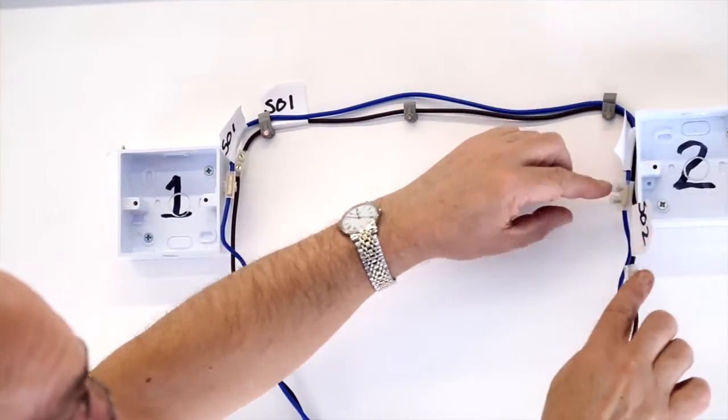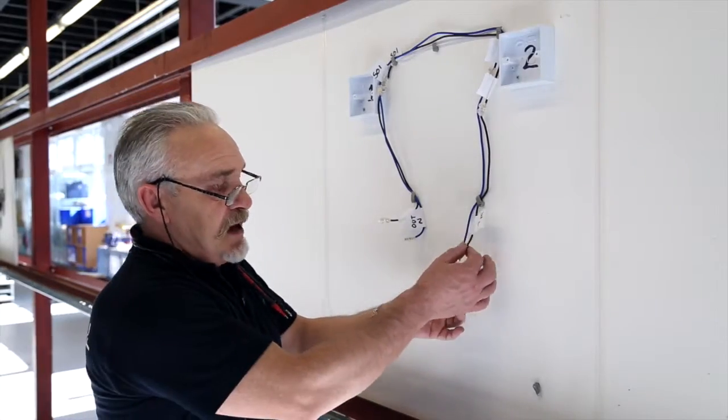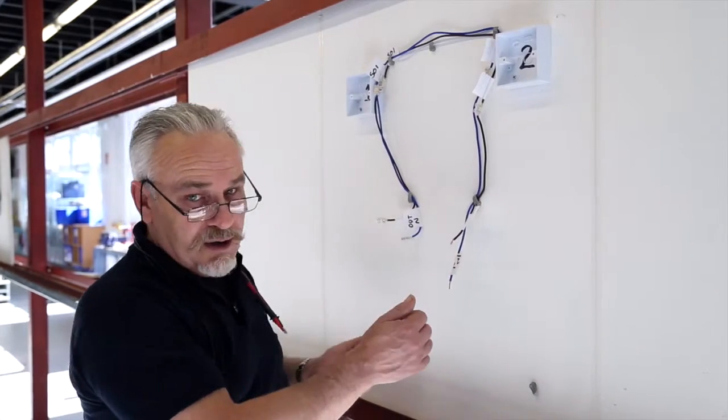Socket outlet two. Same again. Simply replace the socket with connector blocks and then our incoming or return line and neutral.